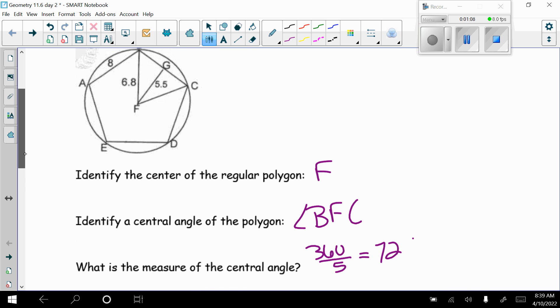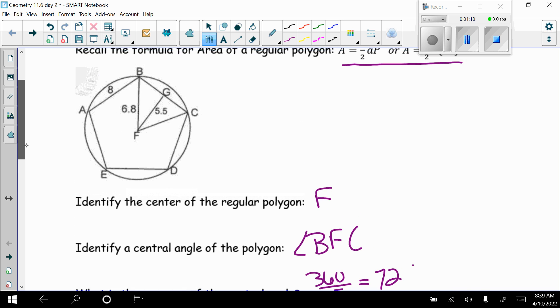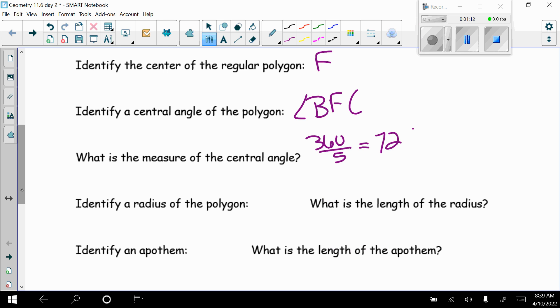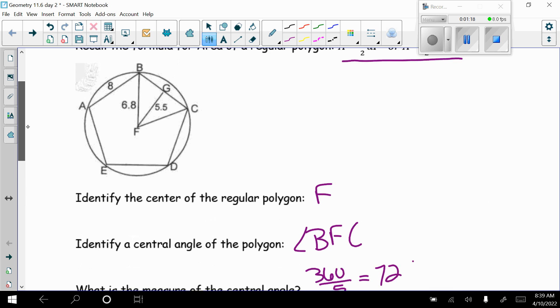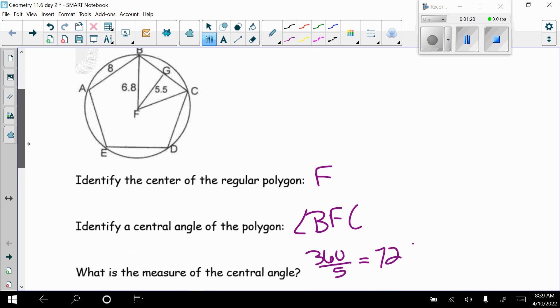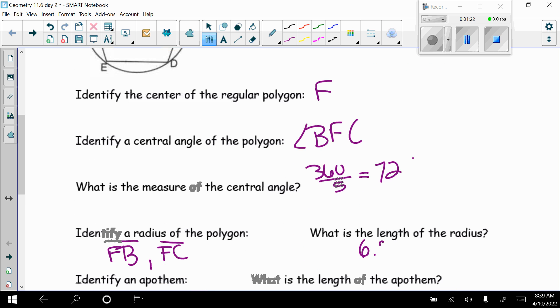It says identify a radius of the polygon. We have two drawn: segment FB and segment FC. What is the length of the radius? Well, they have it marked as 6.8, so 6.8 units.